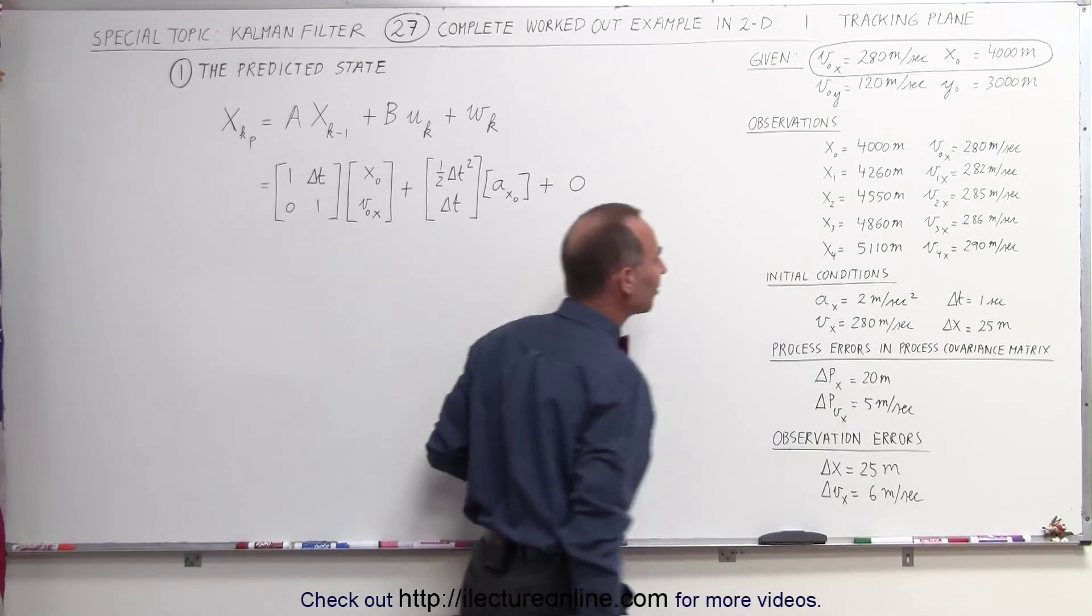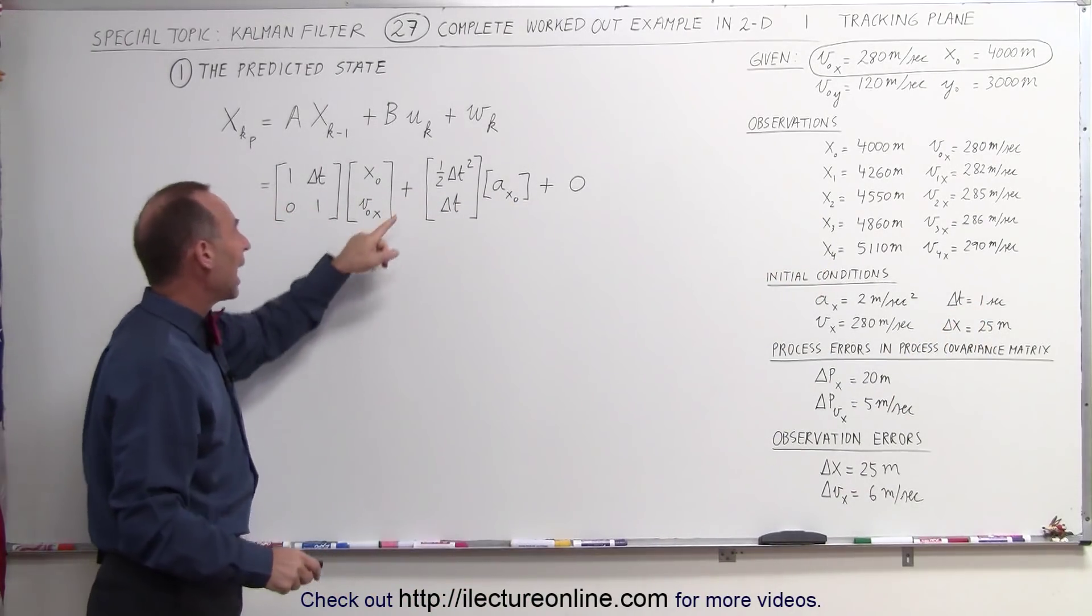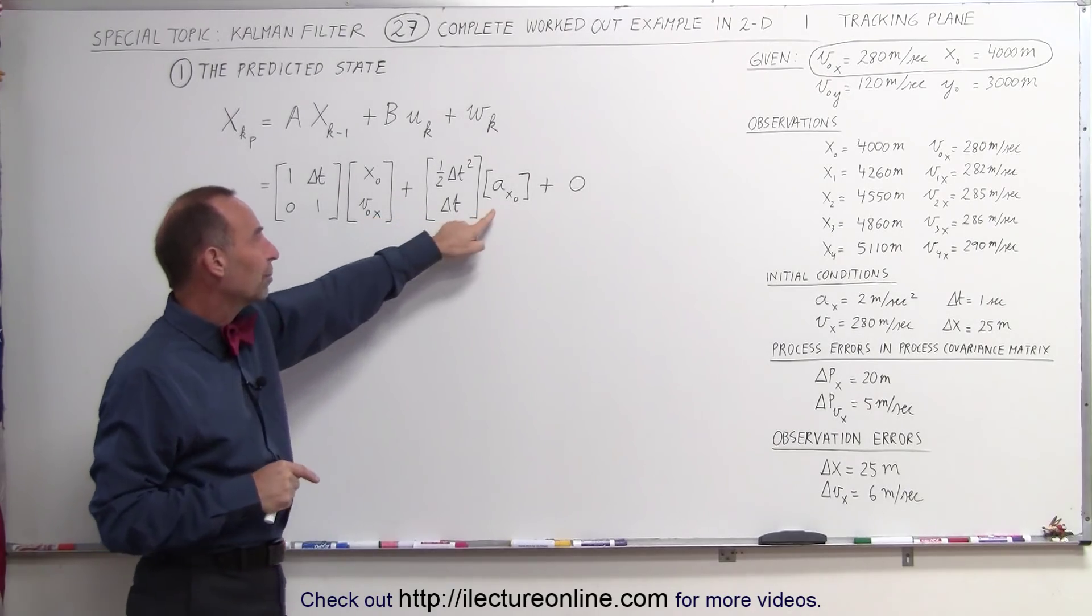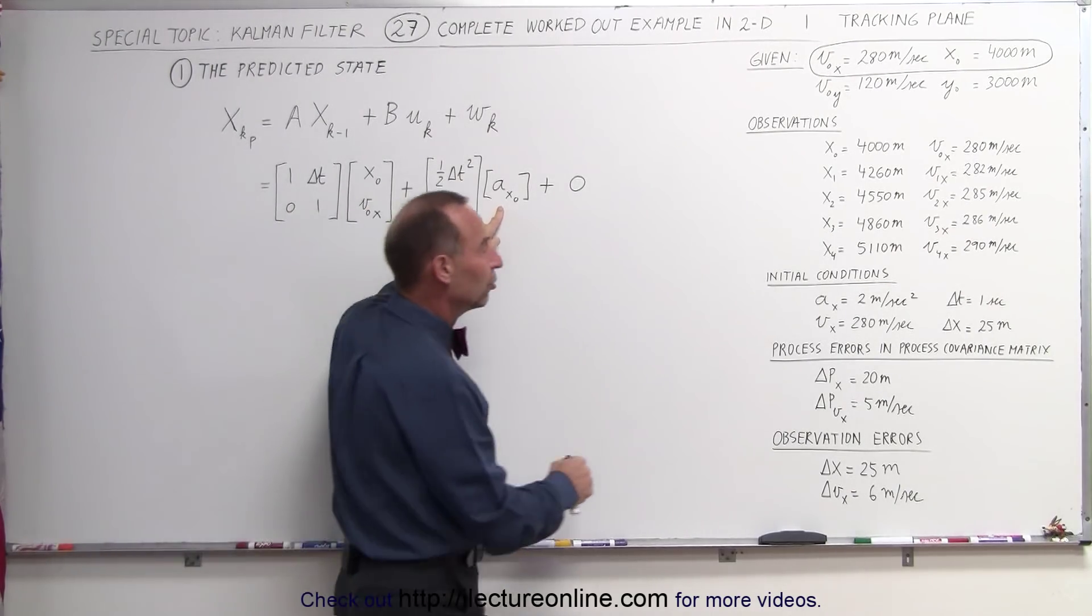In this case our delta t is going to be one second, and then we add to that the changes to the position and the velocity as based upon the acceleration. Notice that our initial acceleration is going to start at two meters per second squared.